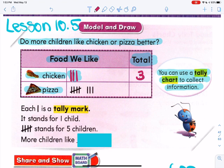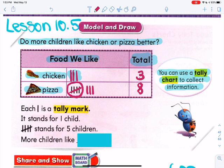Then we're going to look at pizza. Let's see how many people like pizza. If you paid attention to the video, you know you don't have to count from one. When you see that group of five, you just start with five and go: five, six, seven, eight. So the total number of people who like pizza is eight. Each slash is a tally mark and stands for one child, while the group of four with a slash stands for five children — that's why we go right to five.